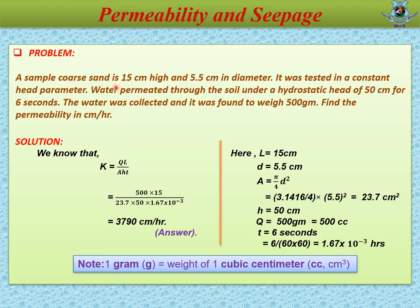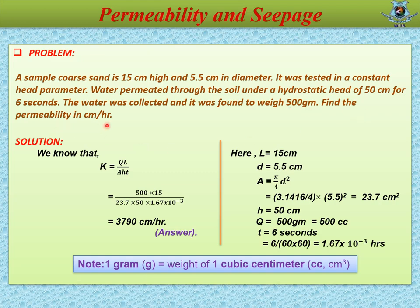Let's solve a problem. A sample core of sand is 15 cm high and 5.5 cm in diameter, that is L = 15 cm and diameter D = 5.5 cm. It was tested in a constant head permeameter. Water permeated through the soil under a hydrostatic head of 50 cm for 6 seconds, meaning H = 50 cm and time T = 6 seconds. The water collected was found to weigh 500 g, meaning Q = 500 g. Find the permeability in cm per hour; that is, we need to calculate the value of K.